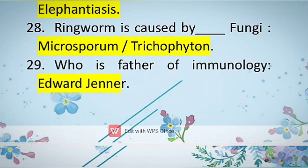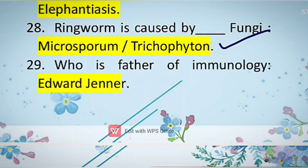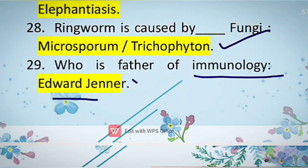Ringworm is a fungal disease caused by Microsporum or Trichophyton, which are the causal organisms. The next question: who is the father of immunology? That is Edward Jenner, who also discovered the first vaccine.